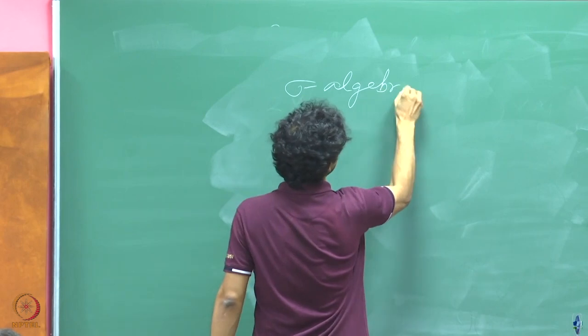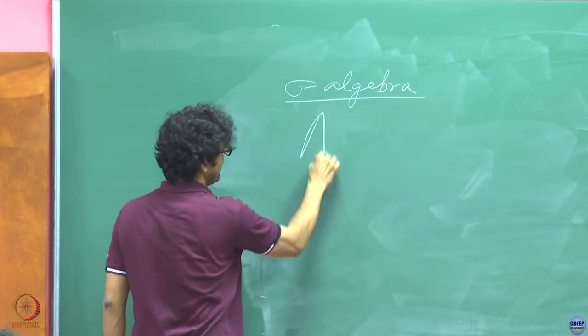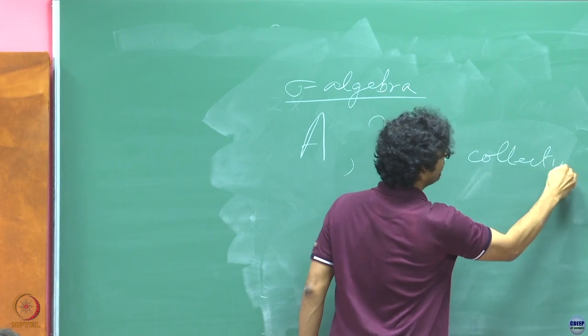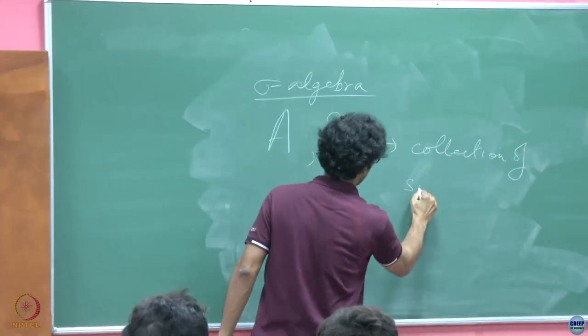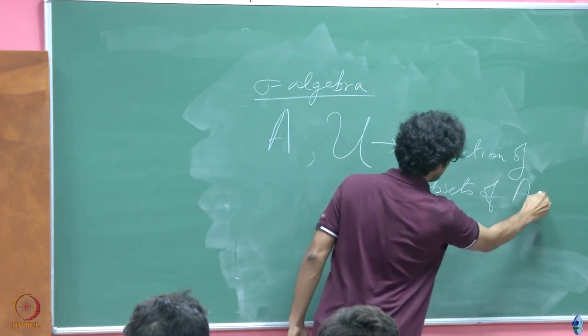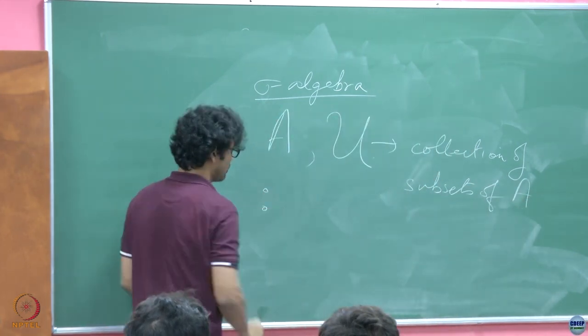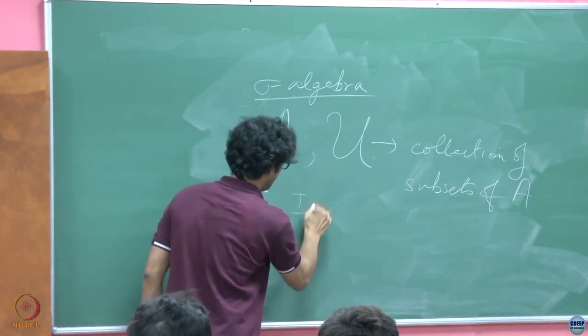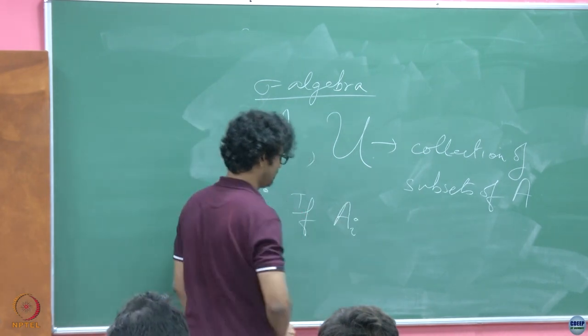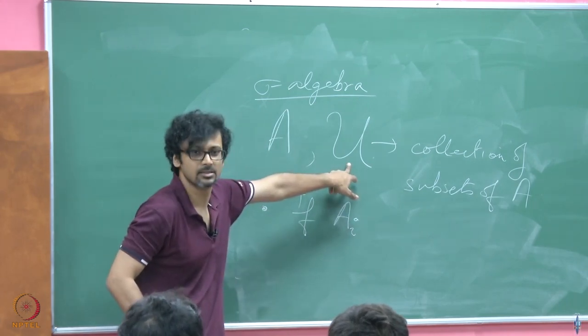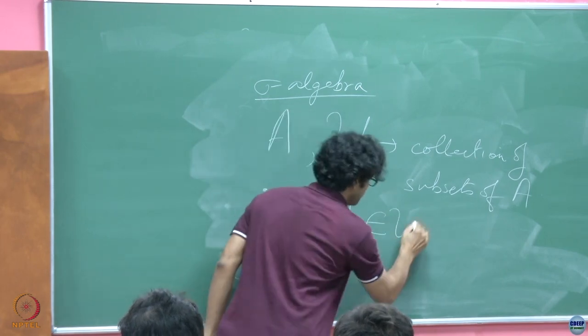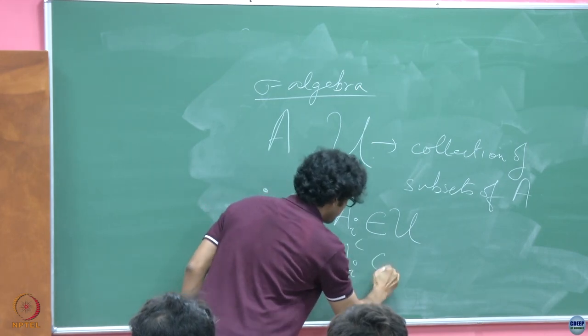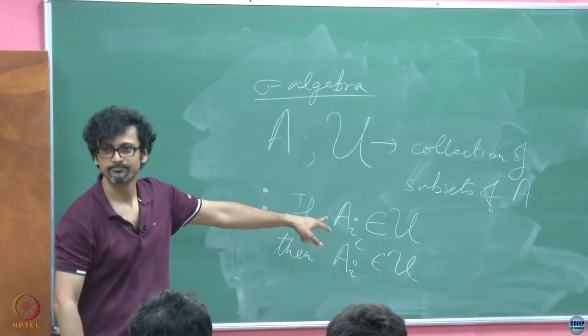So sigma algebra, for instance, a sigma algebra you have a set A and you have a set U which is a collection of subsets of A, such that, so these are symbols by the way, get used to looking at these symbols, such that if A_i, A_i is a member of this collection of subsets, if A_i belongs to U then the complement of A_i must also belong to U. That is the first rule.